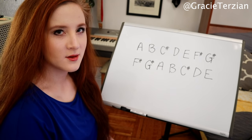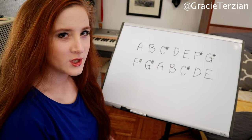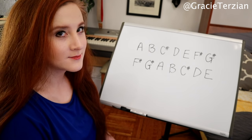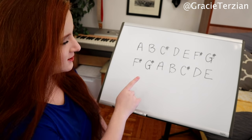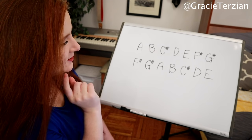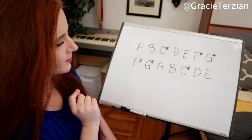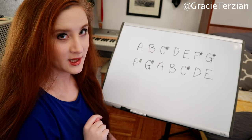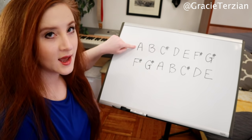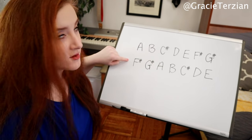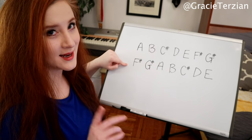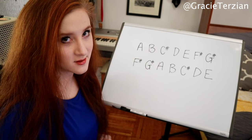Take a look at these two scales. What do you notice about them? Are they similar in any way? If you look closely, you can see that they have the exact same notes inside of them and in the exact same order, but they're starting on a different place. This scale starts on A, and this scale starts on F sharp. And since they start in different places, that technically makes them different scales.